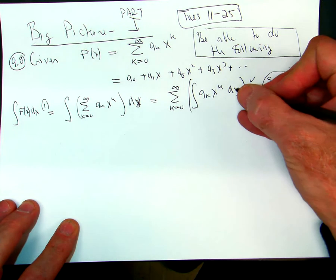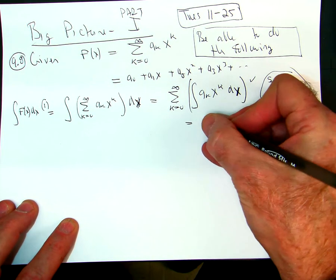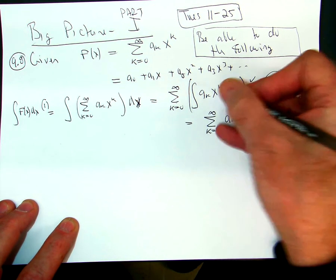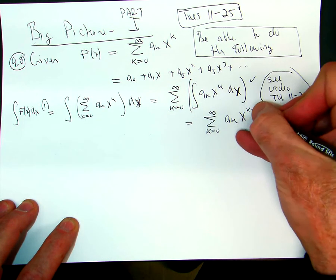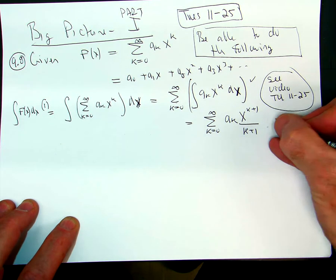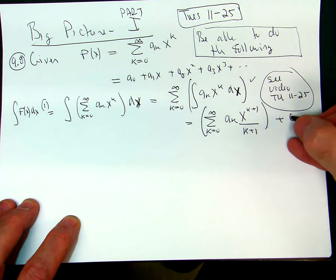This is fairly easy to integrate. That's just equal to - the summation doesn't change, the a_k doesn't change, but you add one to the exponent and you divide by the new exponent. Then you're going to have a constant of integration that's outside the series. This is really the constant term of the series.